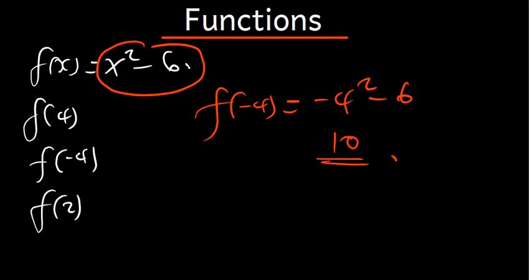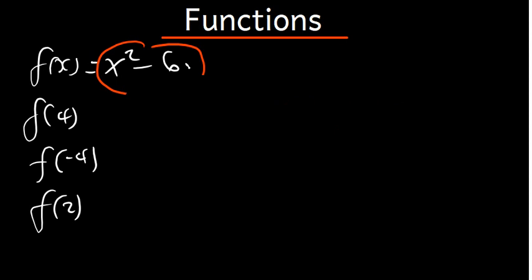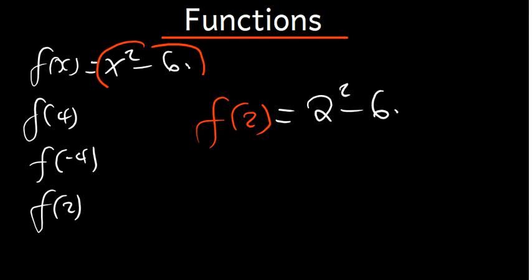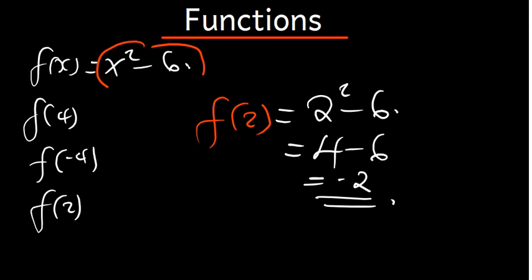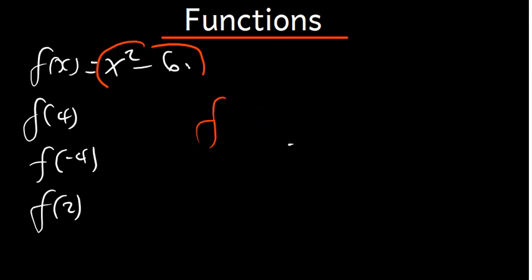Let's go to part 3. They want us to find f of 2. So this is going to be 2 squared minus 6. 2 squared is 4, and 4 minus 6 gives us negative 2. So the answer for part 3 is negative 2.